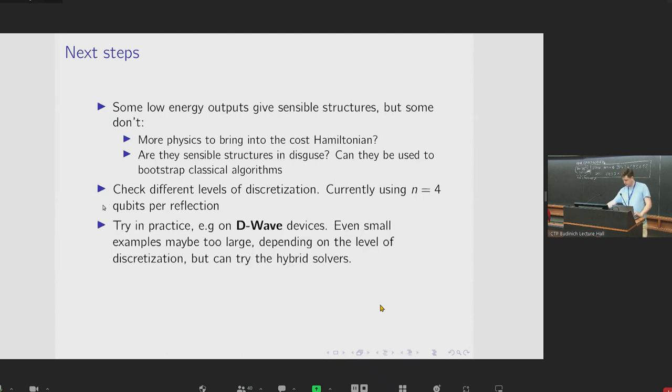And then, of course, we want to try it in practice. For example, on a D-Wave device. So it's not entirely clear whether the small examples that we looked at so far, whether they might be a bit too large still for the current devices, given the need for the minor embedding and depending on what level of discretization we need to use. But if that's the case, then we could obviously still try some of the hybrid solvers that are available. And we could also try creating some toy model structures that will fit on the D-Wave more cleanly in order to test this a bit more thoroughly.